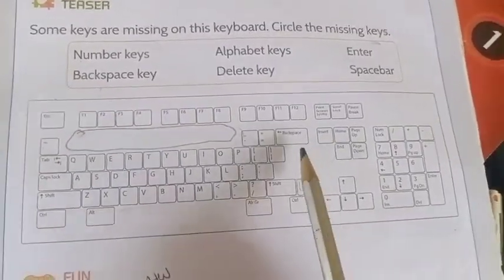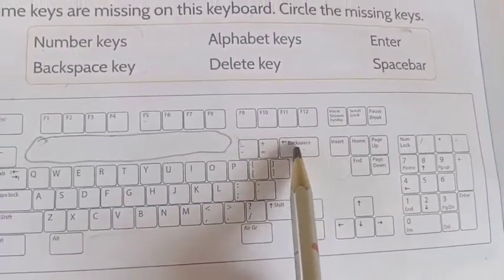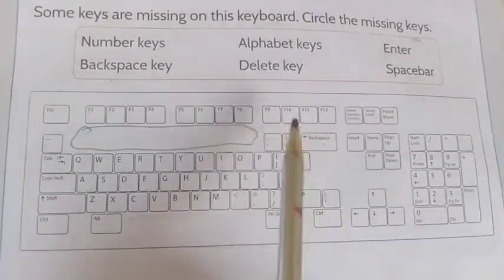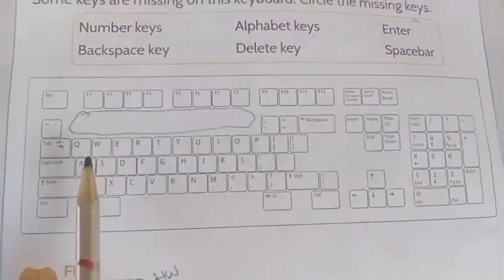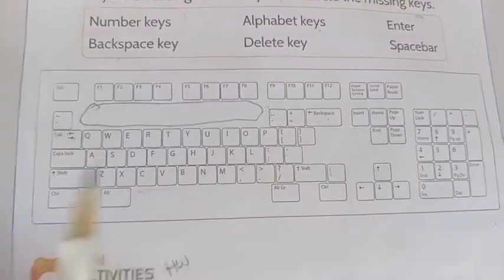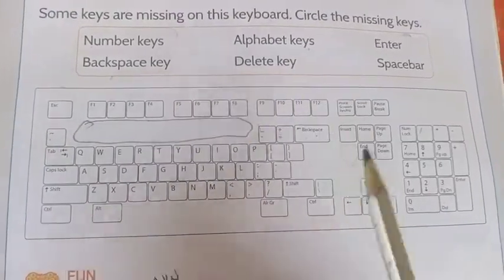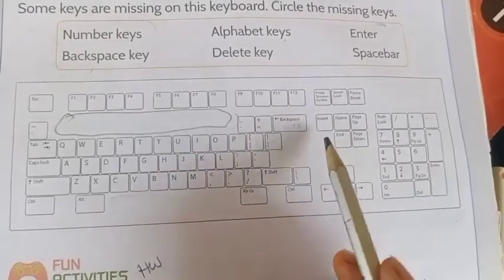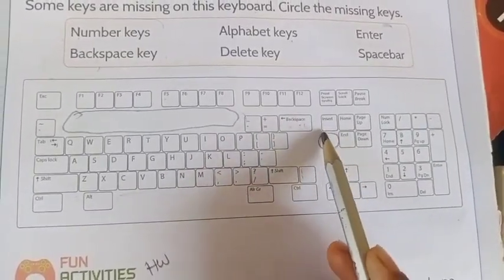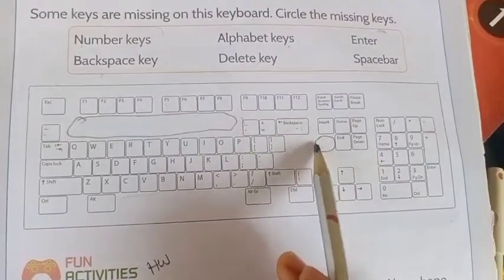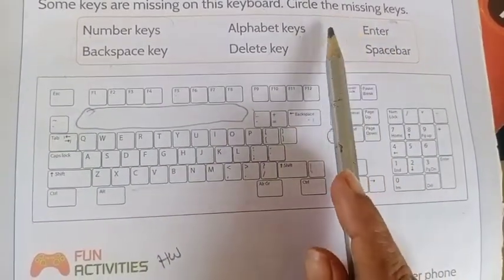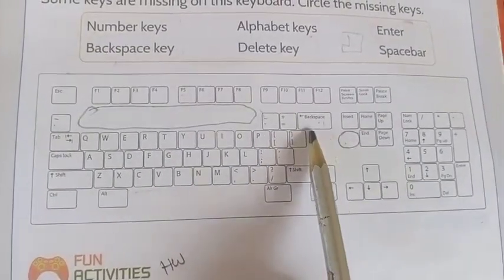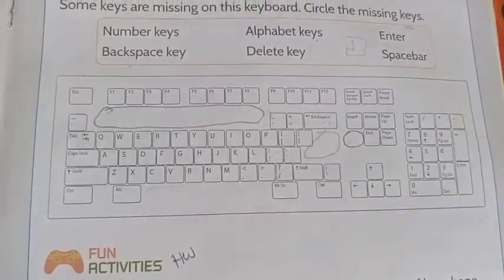Next, backspace key. The place of backspace key — it is there, so you don't have to circle anything. Come to alphabet keys — the alphabet keys are here, you don't have to circle. Next is delete key. The backspace key and delete key have the same work. The delete key is not there — circle it. Enter key: it is the shape of L. The enter key is not there — circle the place of the enter key.